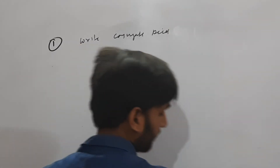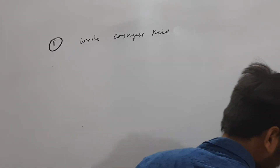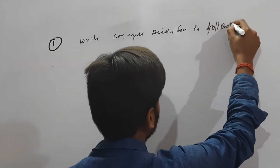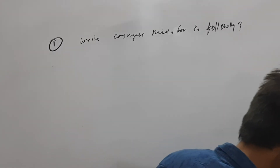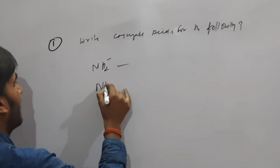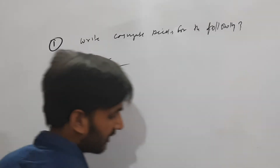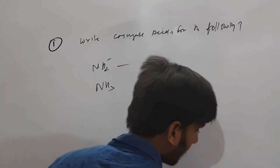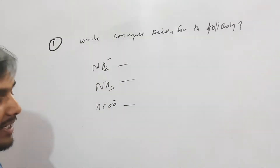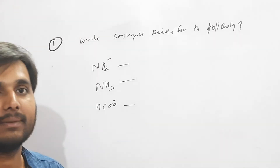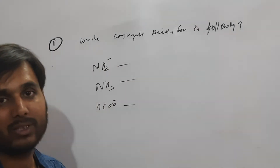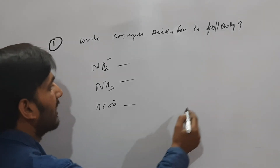Conjugate Acid — find conjugate acids for the following. पहला दिया हुआ है NH2⁻, उसके बाद NH3। H⁺ को Add करना होता है। Simple सा है — जो इसमें अगर H⁺ Add कर देंगे तो क्या बनेगा Conjugate Acid। H⁺ अगर Add हो रहा है।